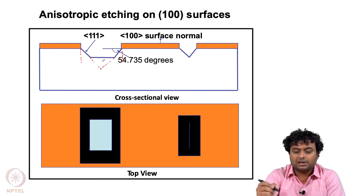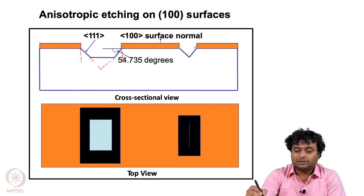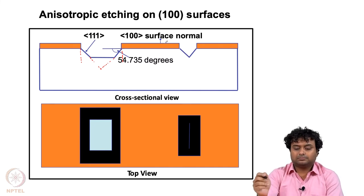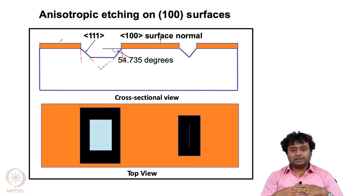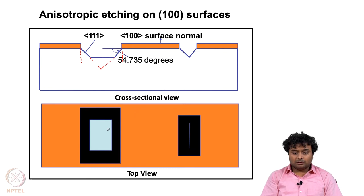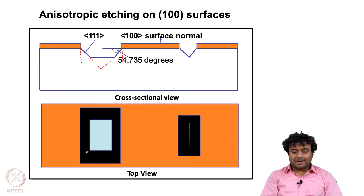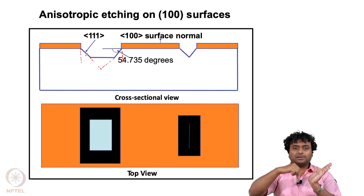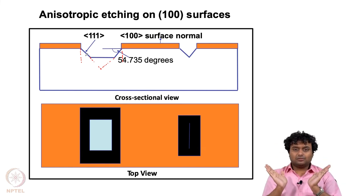After going further into the silicon bulk, both 111 plane surfaces can merge. If the opening is small, they merge much earlier. The masking layer — which will not get etched by KOH — covers the protected region. Under the microscope, the flat regions appear bright because light reflects directly, while the sloped 111 surfaces appear black because light is reflected off to the side.